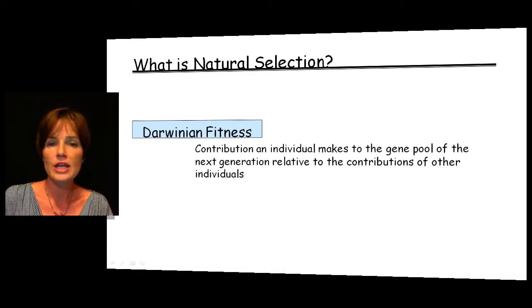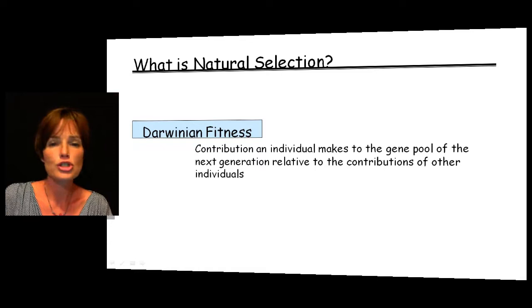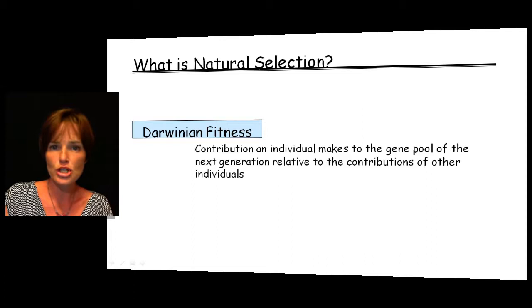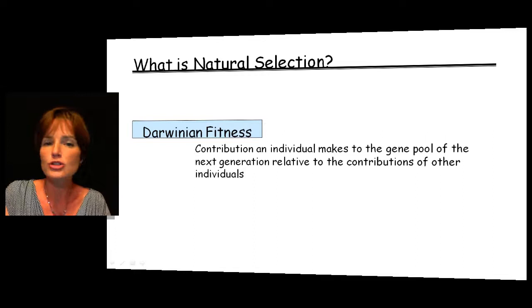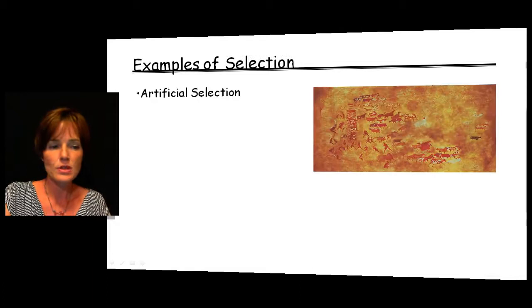This brings us to the important concept of Darwinian fitness. Darwinian fitness is the contribution that an individual makes to the gene pool of the next generation relative to the contribution of other individuals — basically, how did they do compared to everybody else? How are their genes going to be present in the population relative to others? Some individuals will produce more offspring and therefore have a greater contribution to the genes present in the next generation.